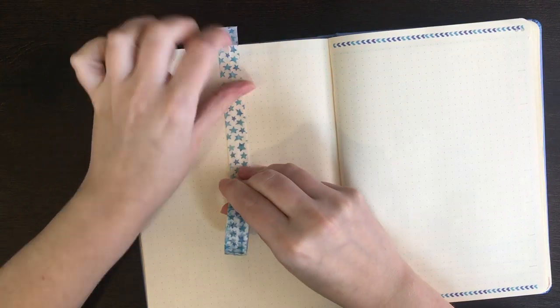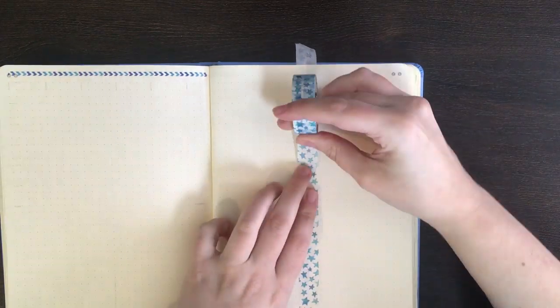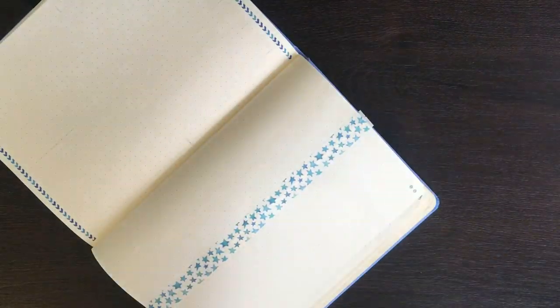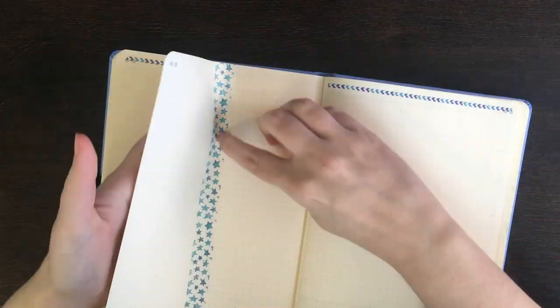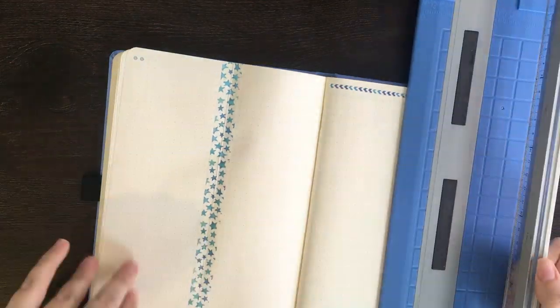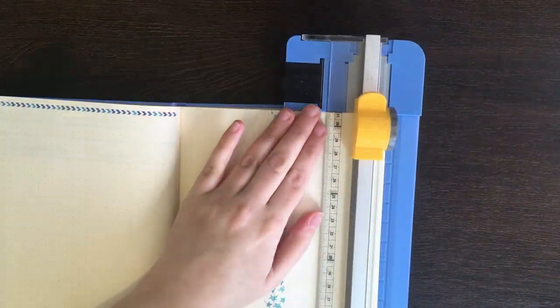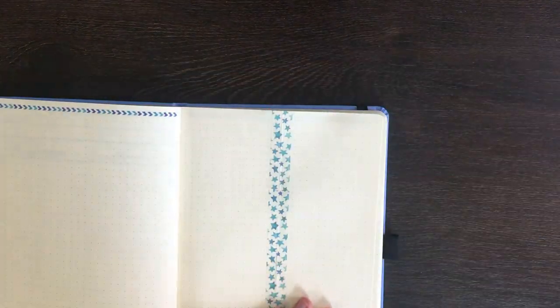For the folded dutch door, I ran some washi tape along the fold on both sides of the page. This just allows the fold to be a little bit more secure, and it means that the page is going to be a little bit more sturdy along that fold. As you guys may well know, folding paper back and forth along one area repeatedly can really weaken the paper, so I'm using that washi tape just to make sure that that area can withstand the repeated folding.